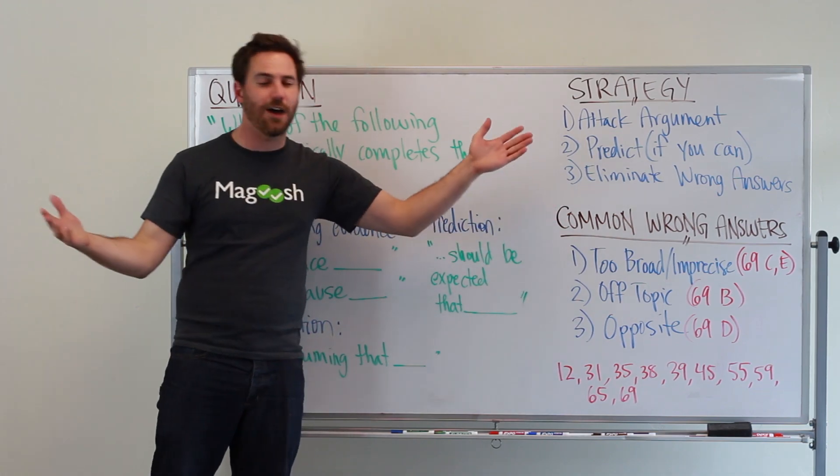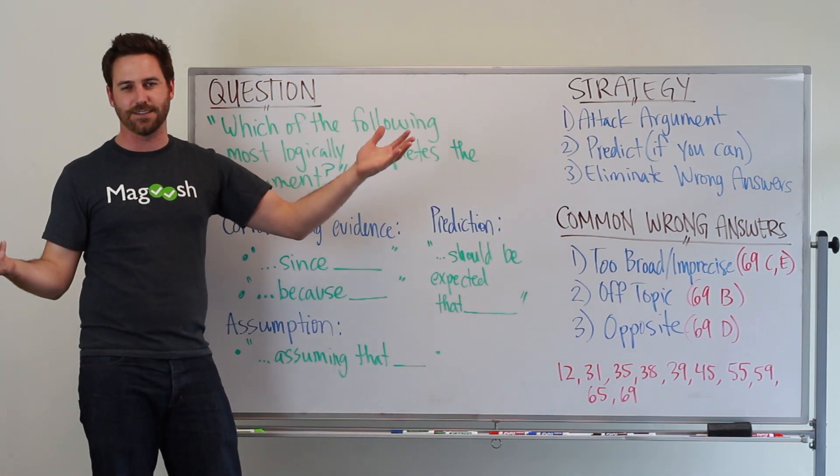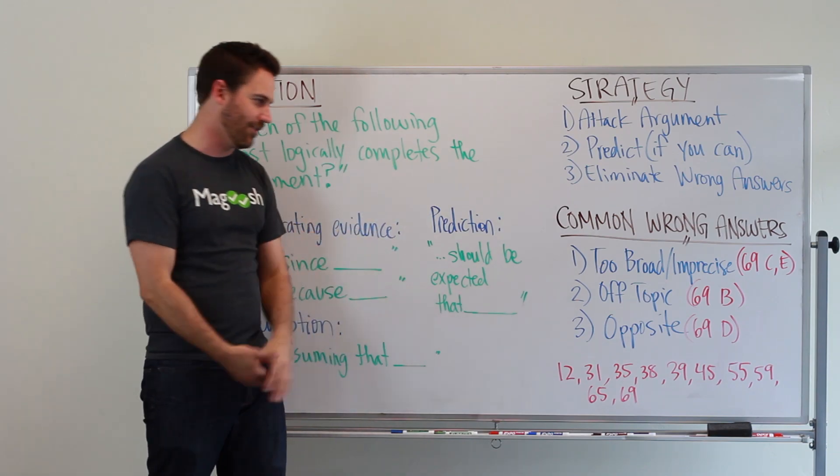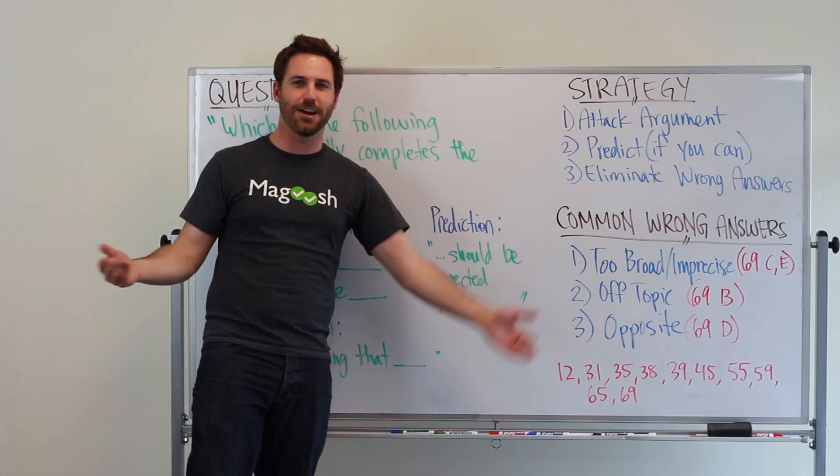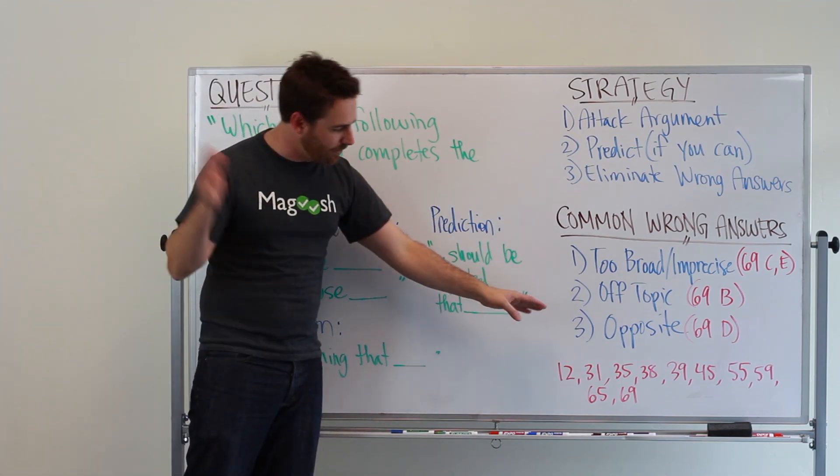The second one is off topic. These are usually pretty easy to see. It just introduces ideas that aren't a part of the argument. It's something new. I thought we were talking about ants and now they're talking about birds. What's that about? So eliminate those.